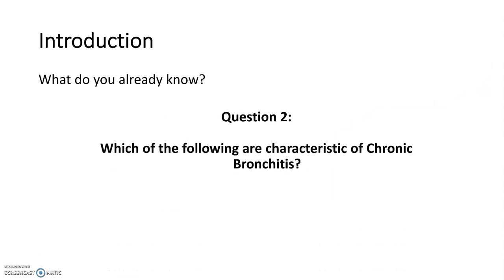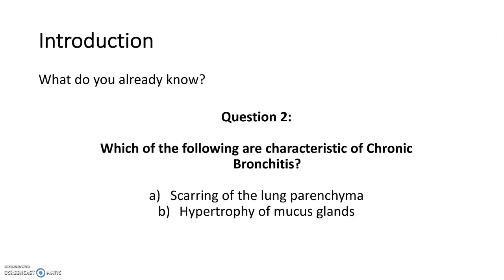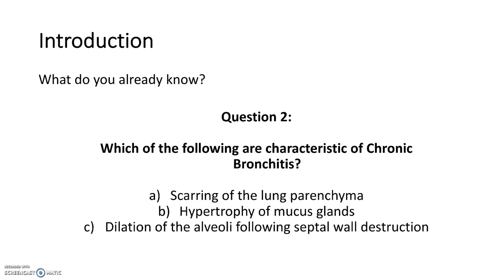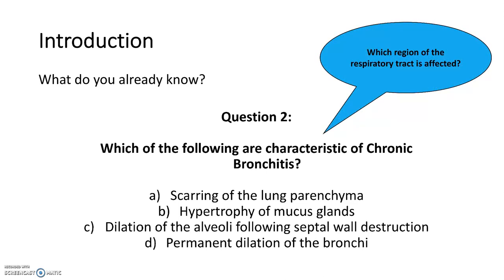Question 2: which of the following are characteristic of chronic bronchitis? Scarring of the lung, hypertrophy of mucus glands, dilation of the alveoli following septal wall destruction, or permanent dilation of the bronchi? The answer is B — hypertrophy of the mucus glands.